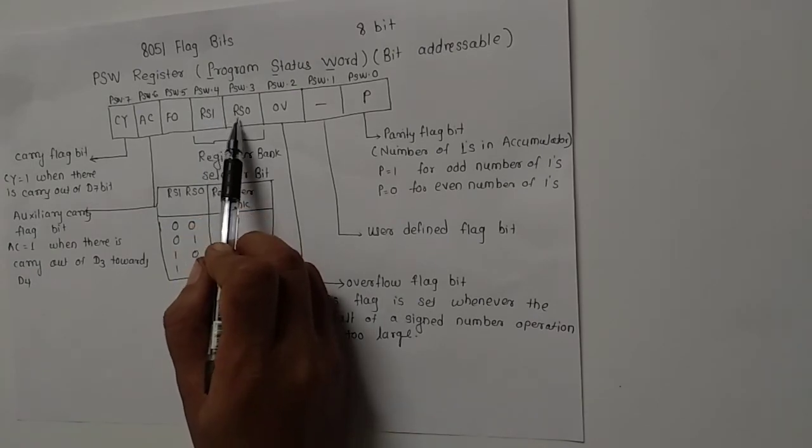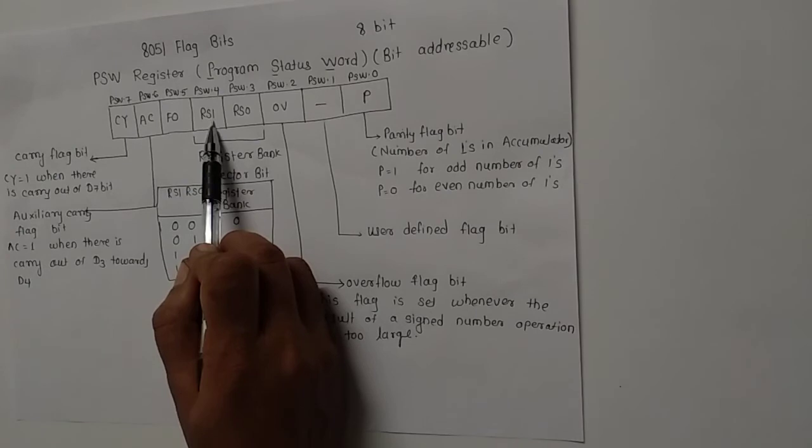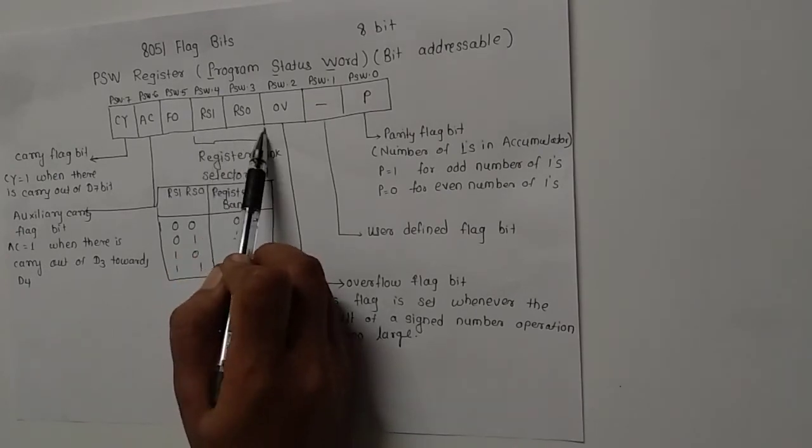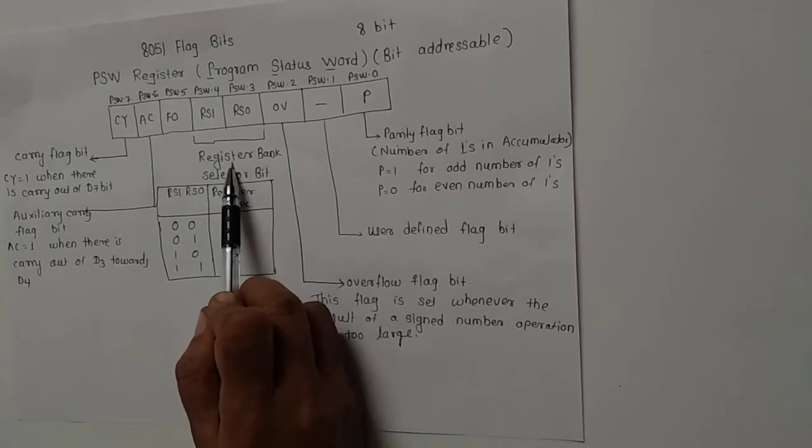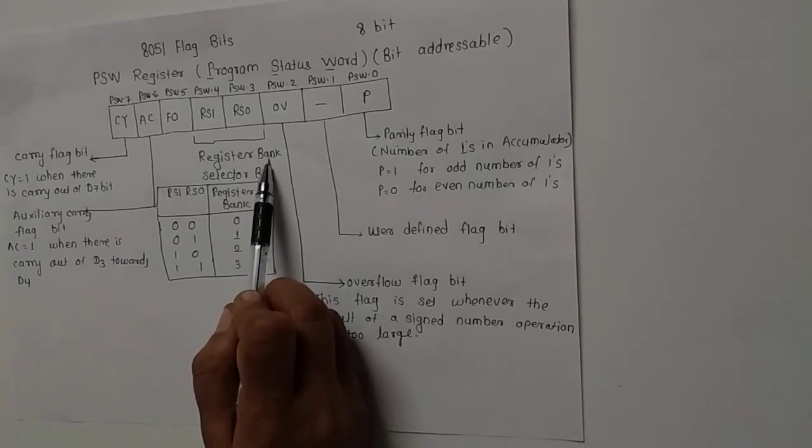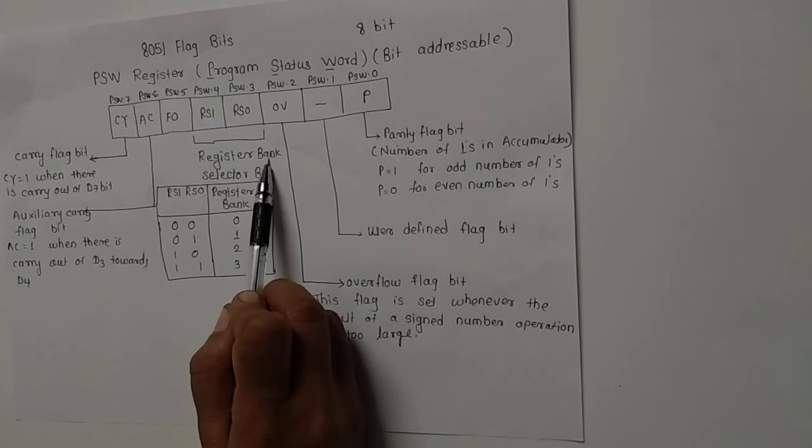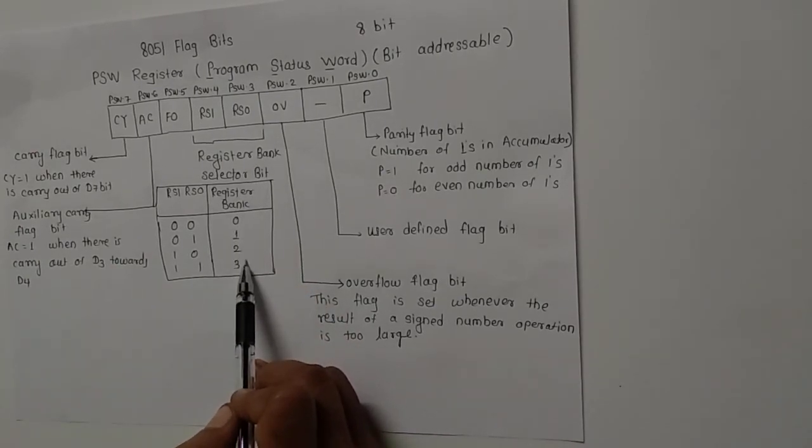The next bits are PSW.3 and PSW.4, which are RS0 and RS1 respectively. These two bits of the PSW register are reserved or used as selector bits for register bank. We know that in 8051 we have 4 register banks, so for that selection we need to have 2 bits.